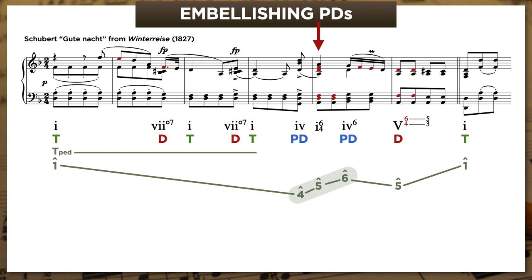Given what we know, a strong-beat tonic 6-4 near the end of a phrase is way more likely to be a cadential 6-4. But this is something new for us—what is a cadential 6-4 doing resolving to IV6? Well, it's not really resolving at all, and that IV6 is no regular predominant. It's actually a backtracking PD—a contrapuntal neighbor chord—that embellishes the cadential 6-4 and draws out the dominant function into the next bar, where the cadential 6-4 returns and then actually resolves.